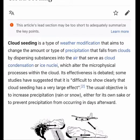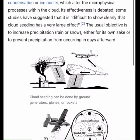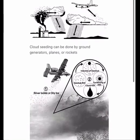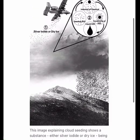Cloud seeding is a type of weather modification that aims to change the amount or type of precipitation that falls from clouds, by dispersing substances into the air that serve as cloud condensation or ice nuclei, which alter the microphysical processes within the cloud. Its effectiveness is debated. The usual objective is to increase precipitation — rain or snow — either for its own sake or to prevent precipitation from occurring in days afterward.